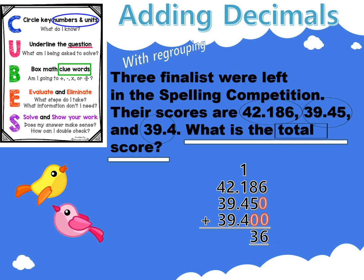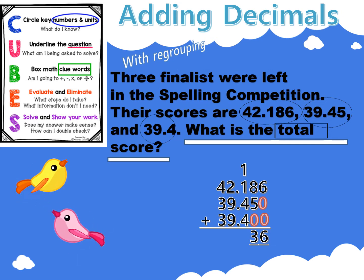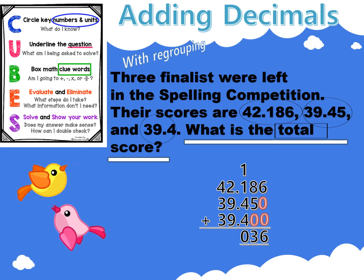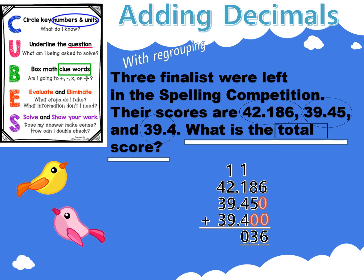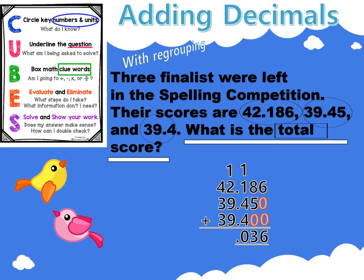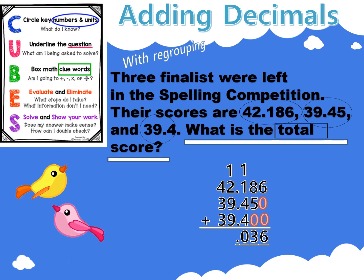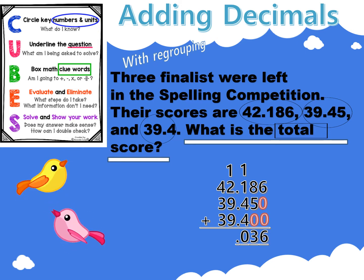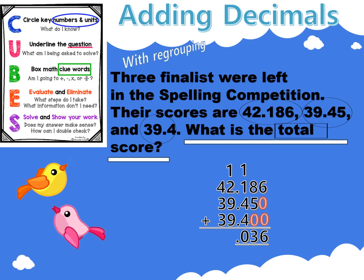Regroup ten tenths as zero tenths and one one. Place your zero tenths under your tenths column. Carry your one above your ones column. Place your decimal point.